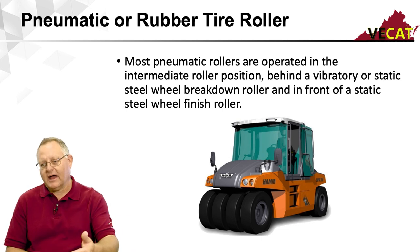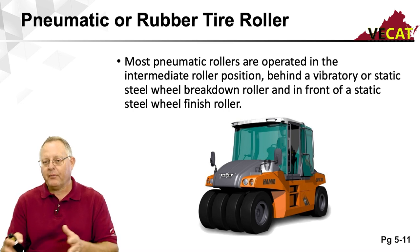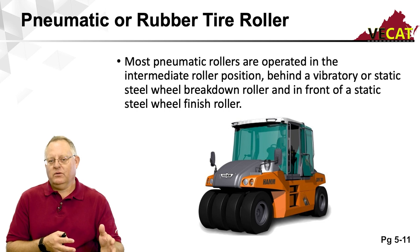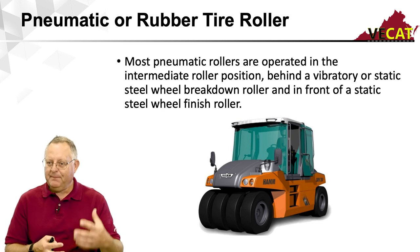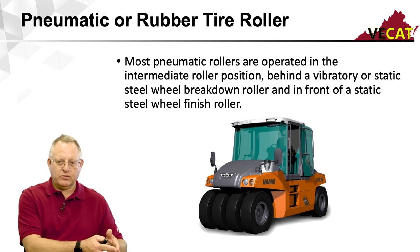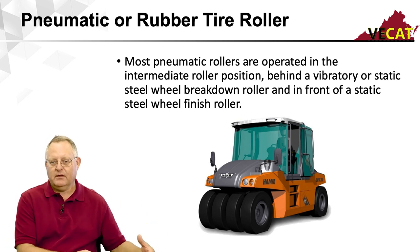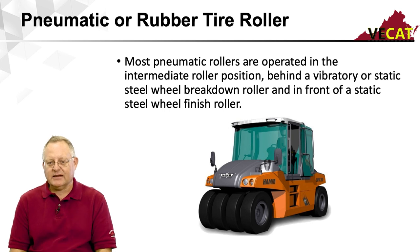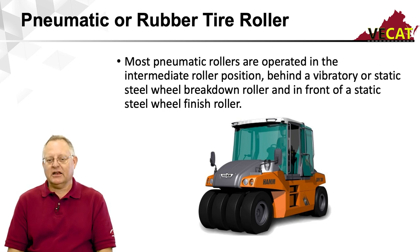The pneumatic or rubber tire roller uses tires with adjustable air pressures to achieve compaction. These are seen more in other states but do appear on some projects in Virginia. They are typically used in the intermediate rolling phase — right after the initial breakdown. You'll also see pneumatic tire rollers on cold recycling projects and certain other specified projects, though on most paving projects they are not required but remain an option for the contractor.